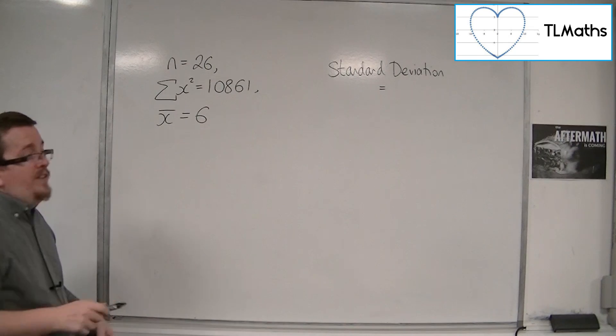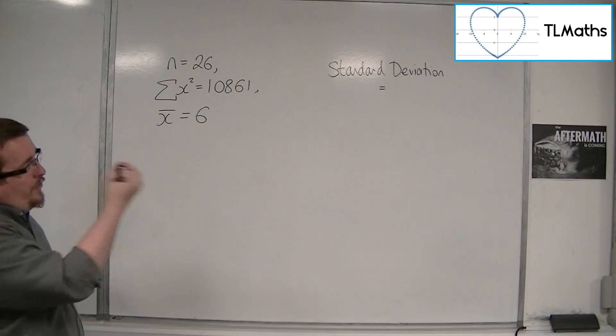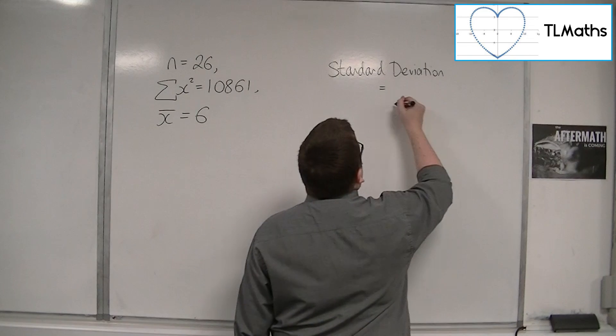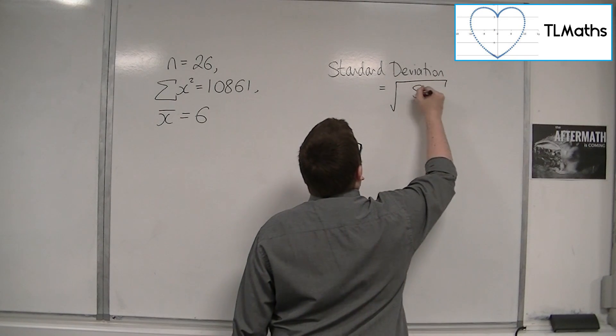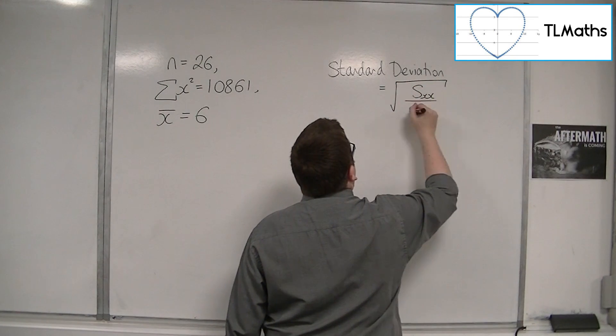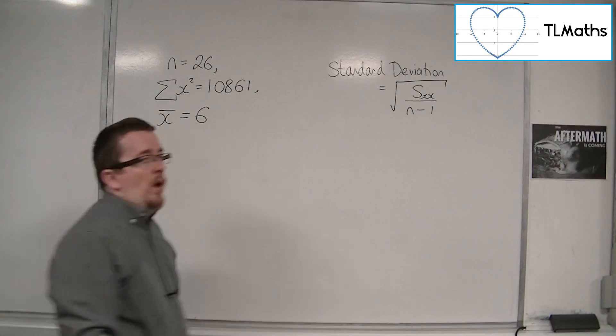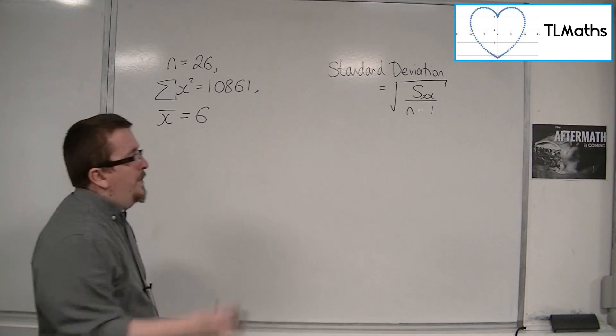What do we do first? We want to remember that the standard deviation is the square root of sxx, the sum of the squares, divided by n minus 1. That's what we need to remember here.